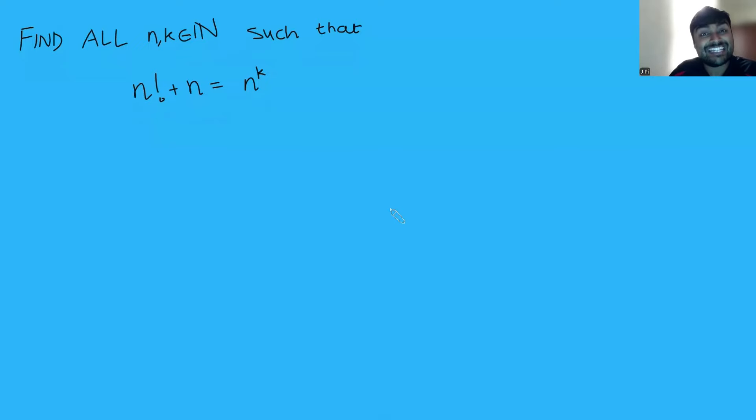We want to find all positive integers n and k such that n factorial plus n equals n to the k. So we're going to dive into a solution here. First things first, k cannot be 1. Pretty easy to see why. If k was 1, this would just be n to the 1, which is n. The n's would cancel out, and then you get n factorial is 0, which cannot happen.